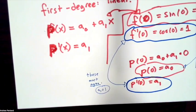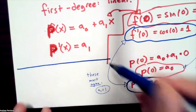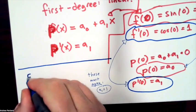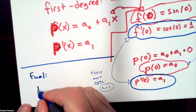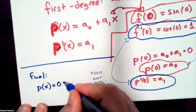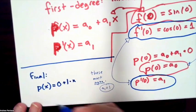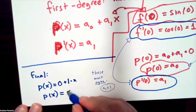My final answer here then comes from just taking my a sub zero and a sub one values and plugging them back into my original formula. My final answer here would be that p of x would be equal to zero plus one times x, and I could simplify that further to p of x is equal to x.